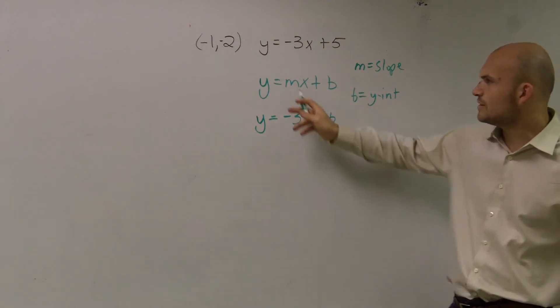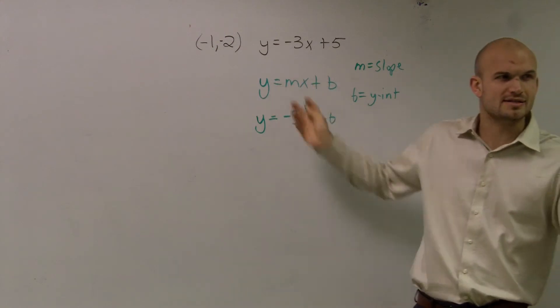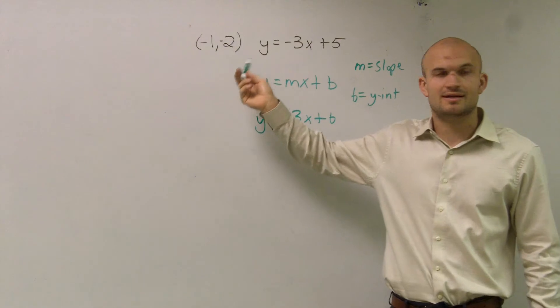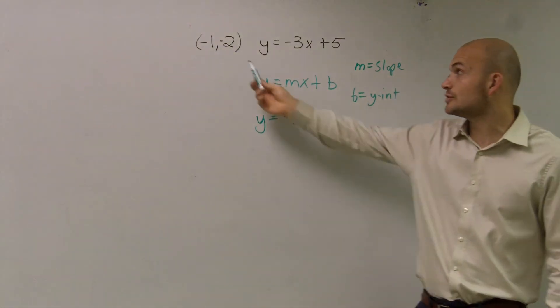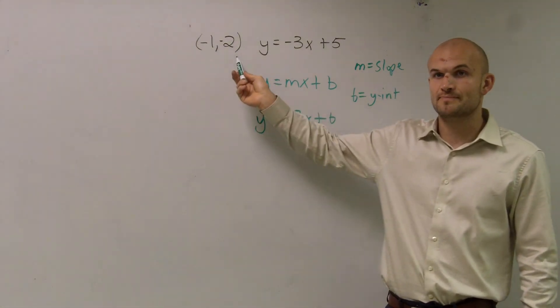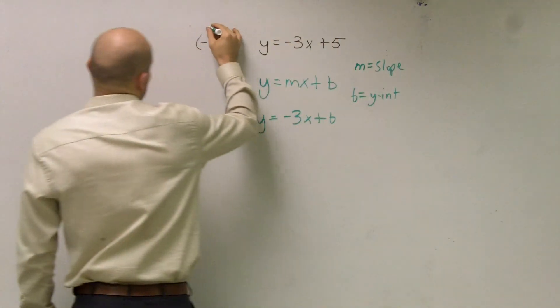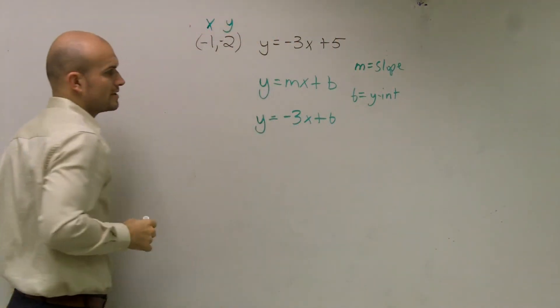Now, the next thing we need to look at is what do x and y represent? Why do we have an x and a y? An x and a y represent any point that's on the given line. So if my new parallel line goes through these two points, I can plug those points into my equation. So remember, your first coordinate is x, and your second coordinate is y.